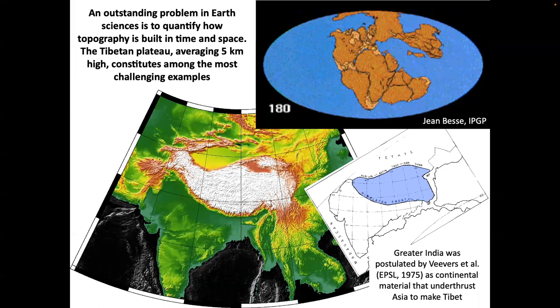Greater India is a part of the Indian plate that's been subducted — it's gone. There's a big debate about how big it was, how big was the Indian plate before subduction. One of the first hypotheses was by Wevers et al., proposing that continental crust was subducted and you essentially doubled the thickness of the crust.